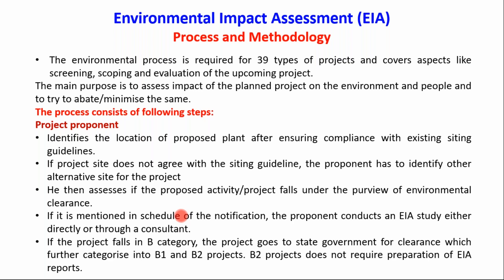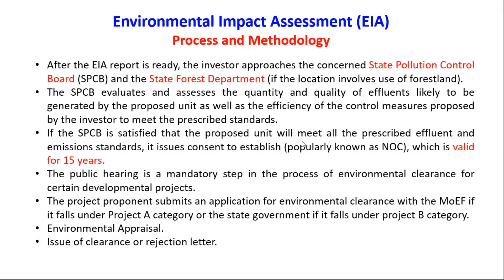We have to identify whether the project is of Type A, Type B, B1, or B2 — all these categories and their criteria were discussed in the Environmental Clearance presentation. After the EIA report, the State Pollution Control Board and the State Forest Department decide whether to accept the application or not.